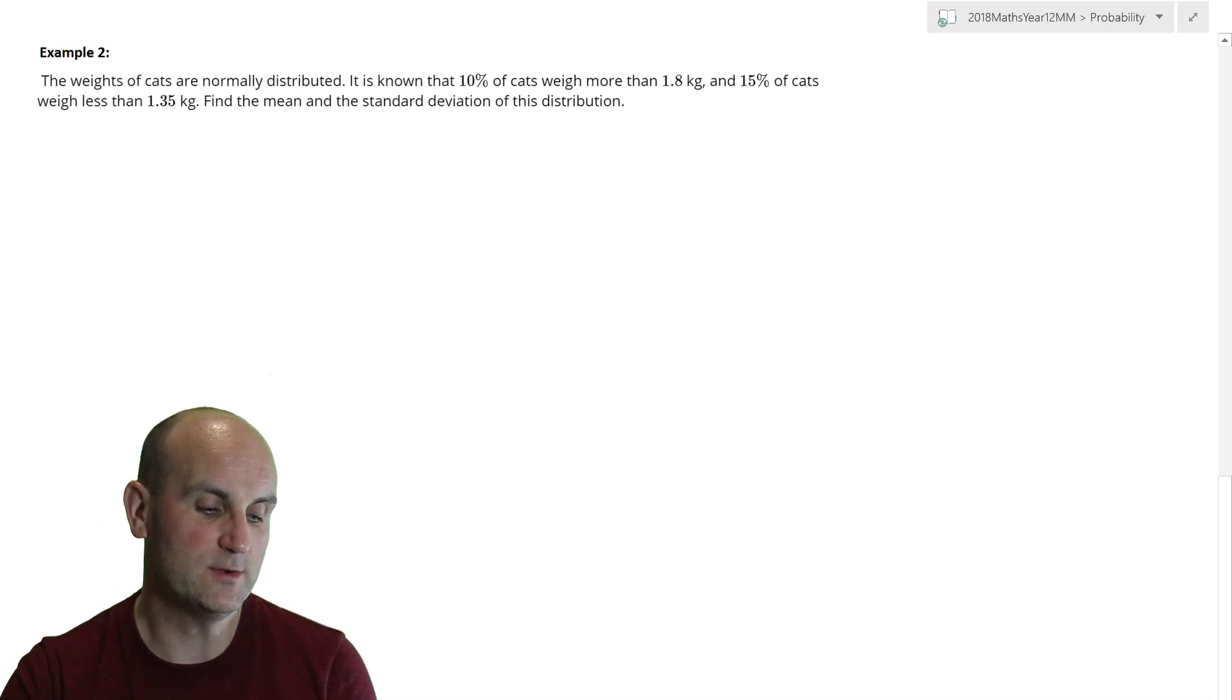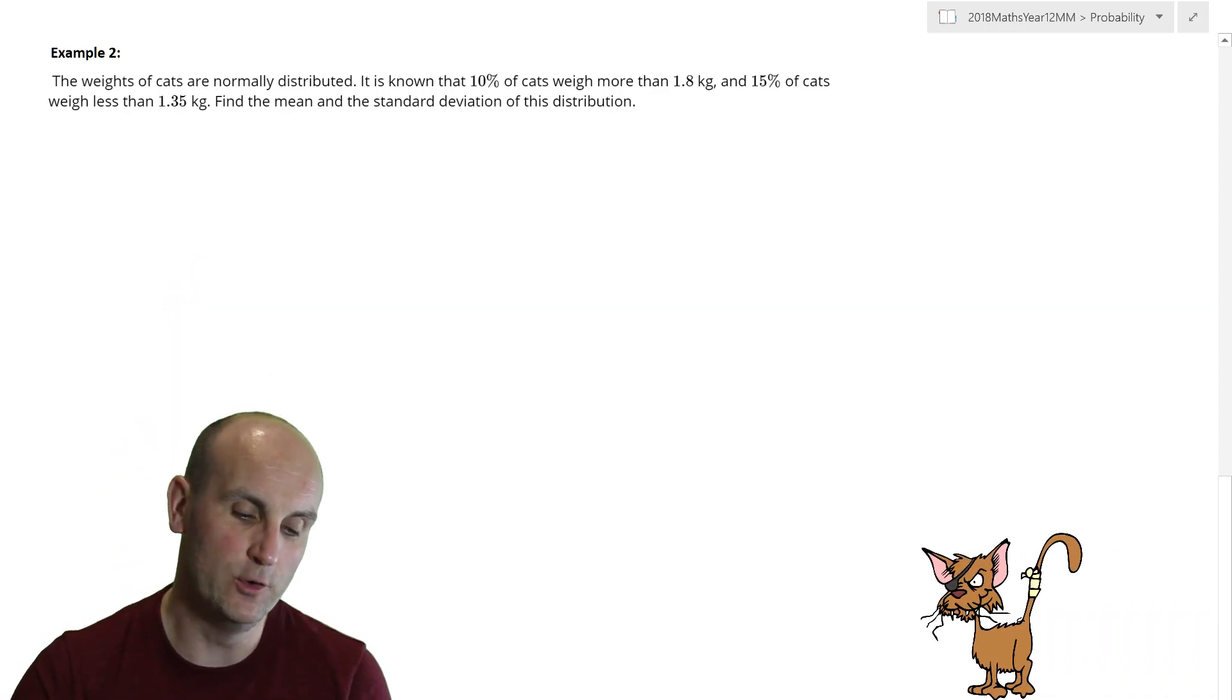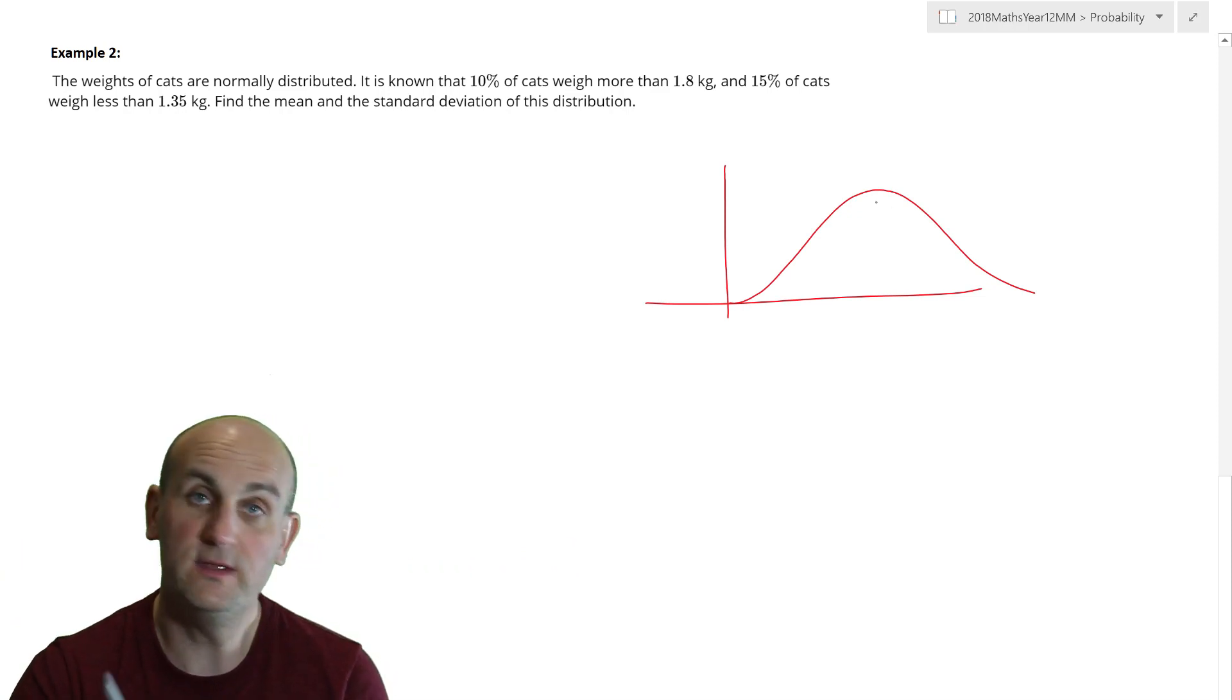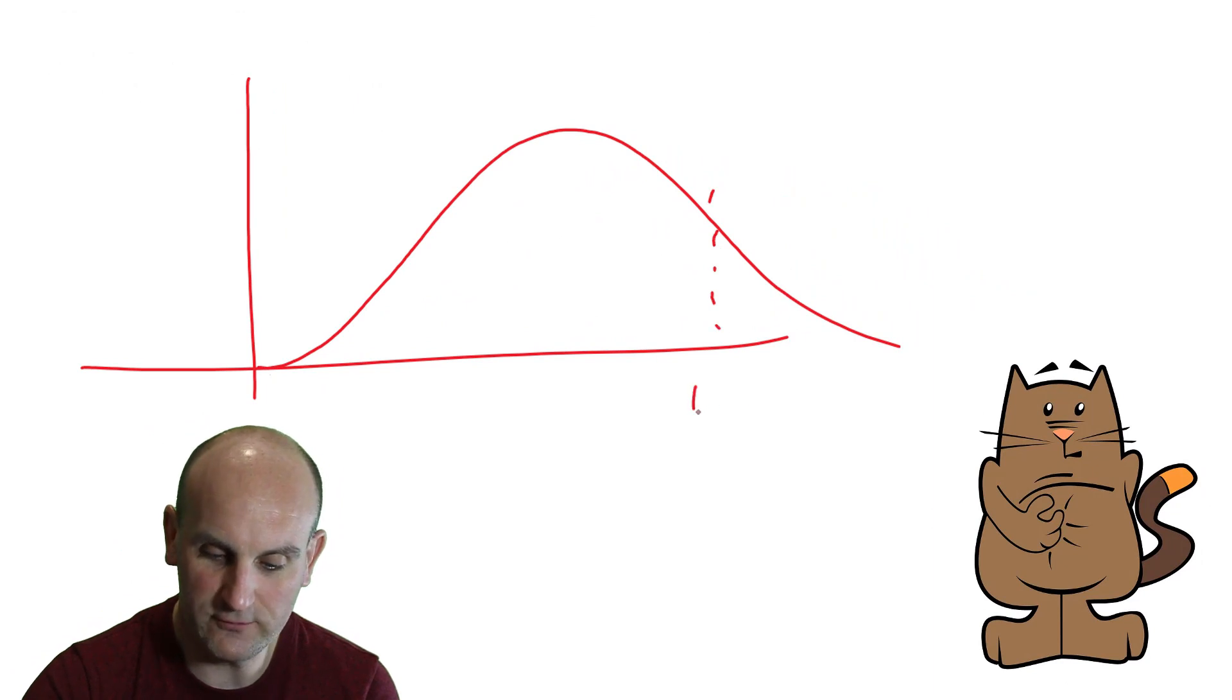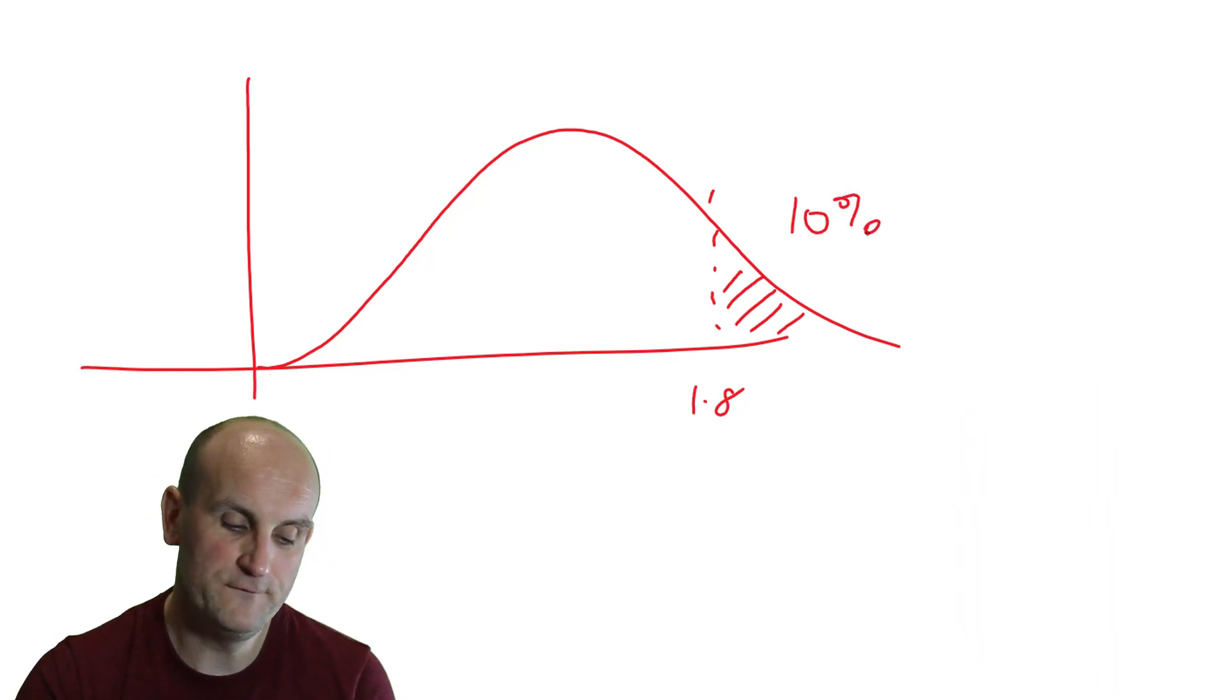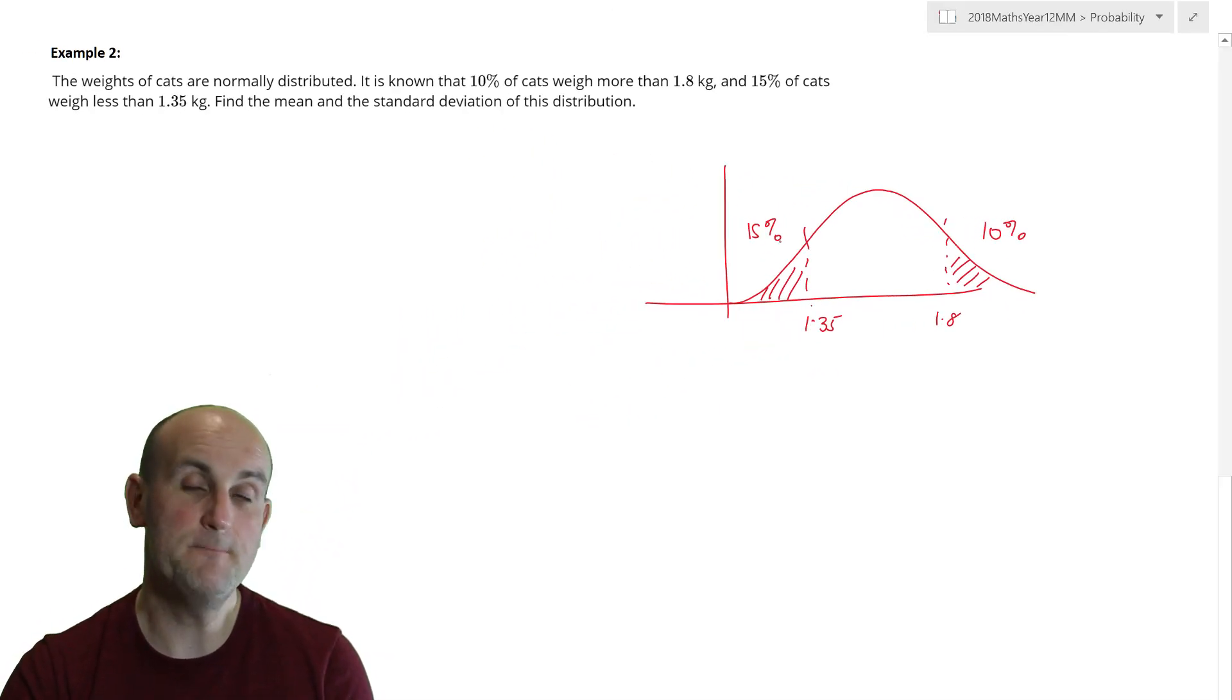Example two, these questions I see in exams all the time. The weights of cats are normally distributed. So here we go. They are normally distributed with, ah, now this is interesting. It doesn't give me a standard deviation or a mean. What it's telling me is 10% of cats weigh more than 1.8 kilograms. So they've given me a data item. They've given me a value of X and they've given me a percentage. 15% of cats weigh less than 1.35. So there's 1.35 and I now know that that is 15% of cats. Find the mean and the standard deviation.